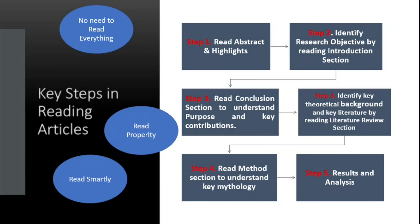The five steps are: number one, read abstracts and highlights — we will discuss what highlights and abstract are; number two, identify the research question or research objective; number three, read the conclusion section to understand the purpose and key contribution; number four, identify theoretical backgrounds — what literature and previous theories have been used; and number five, read the methodology part, then results and analysis.